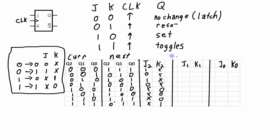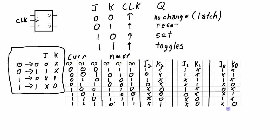The same process is repeated for J1 and K1, looking at the current Q1 value transitioning to the next Q1 value. And finally, the J0 and K0 values can be determined from the Q0 current value to the Q0 next value transition. Now we know for each current-to-next value transition what the J values and K values need to be. The last thing to do is to determine the logic for each one of these six inputs to feed into the JK flip-flop for Q2, Q1, and Q0. I will show you how to do that in the next synchronous counter design video. Thanks for watching.